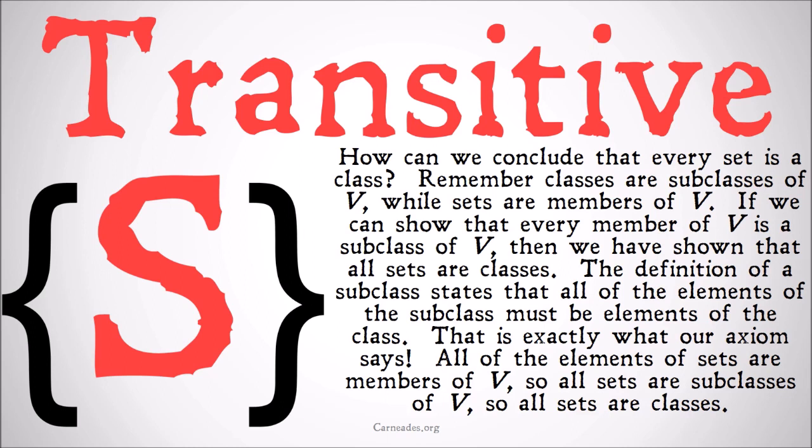How can we conclude that every set is a class? Remember: classes are subclasses of V, while sets are members of V. If we can show that every member of V is a subclass of V, then we've shown that all sets are classes. The definition of a subclass states that all of the elements of the subclass must be elements of the class. That is exactly what our axiom says — all of the elements of sets are members of V, so all sets are subclasses of V, so all sets are classes.